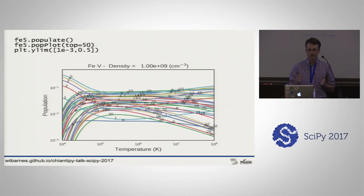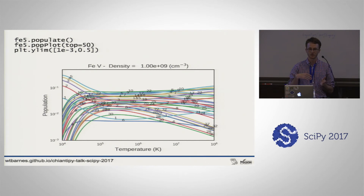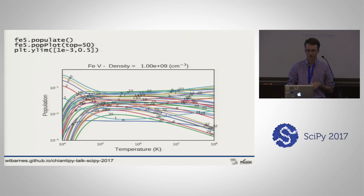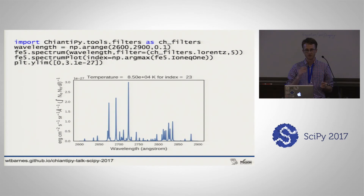ChiantiPy makes this calculation relatively straightforward. You just call the populate method on the ion object, which creates an attribute called Populate - that's where the answer from the calculation lives, and it allows you to cache the answer so you don't have to repeat the calculation later. Ken has also written some nice convenience functions for plotting these things - for example showing the top 50 energy levels plotted as a function of temperature, or calculating the spectrum for a particular wavelength range convolved with a Lorentzian filter.